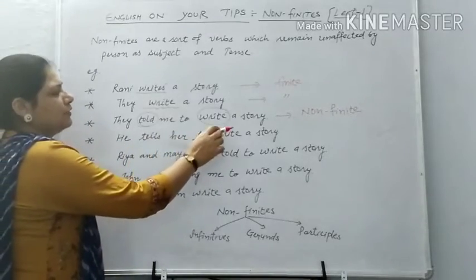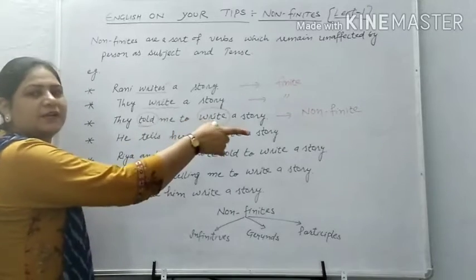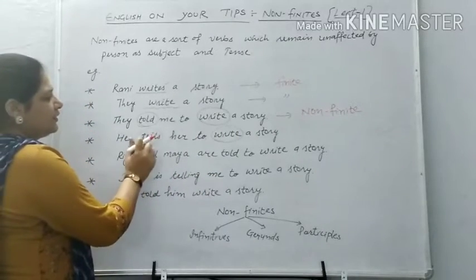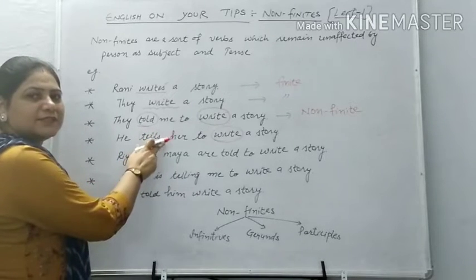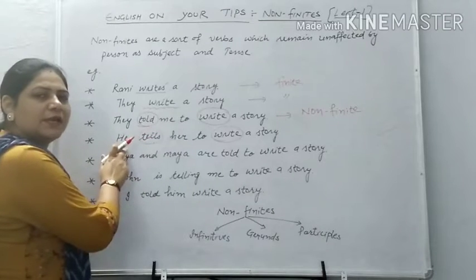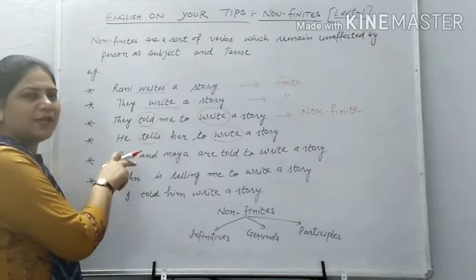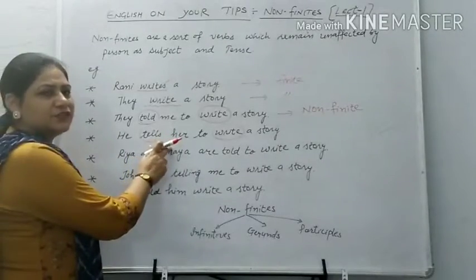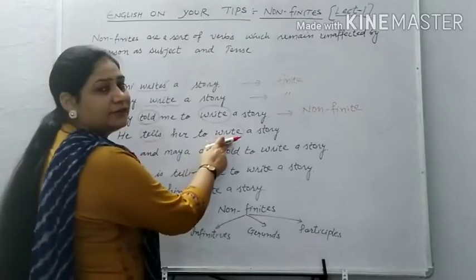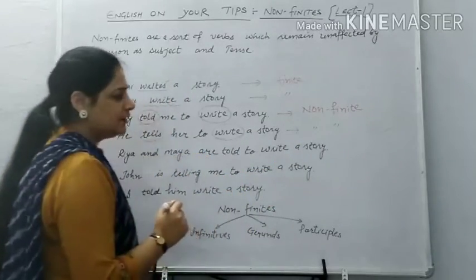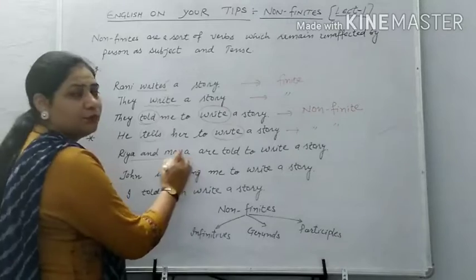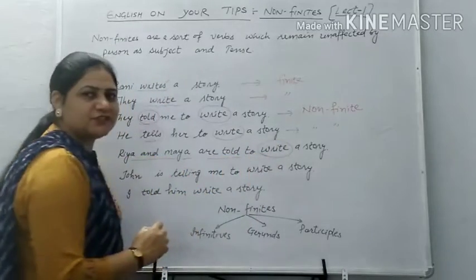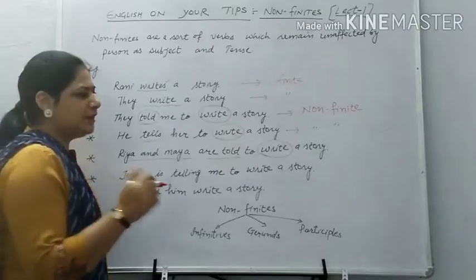Next example: 'He tells her to write a story.' There are two verbs. 'Tells' is according to present tense — 'he' is a singular subject, so it changes accordingly. But again, 'write' doesn't change. So it is an example of non-finite. Next example: 'Via and Maya' — both are plural, so the verb changes according to plural, but again 'write' is unchanged. So what is it — finite or non-finite? Obviously non-finite.